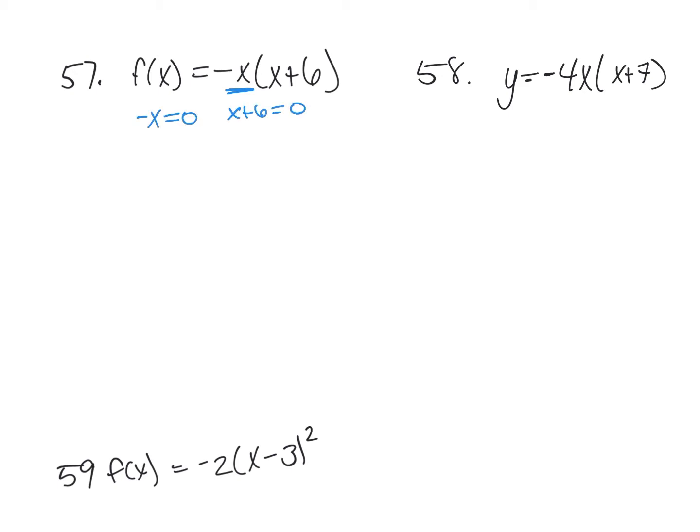Number 57. These graphs are in intercept form. I did see a few people multiplying them out and doing them in standard form, which isn't wrong, but you're working too hard. For number 57, my intercepts are when negative x equals zero and when x plus six equals zero. That makes my intercepts zero and negative six.